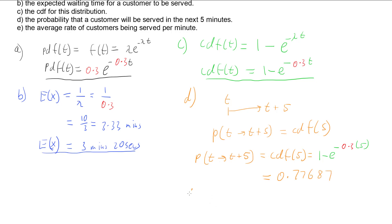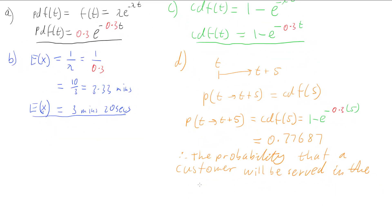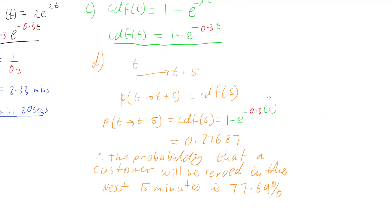So we can write our answer: therefore, the probability that a customer will be served in the next 5 minutes is, converting to a percentage, 77.69%.